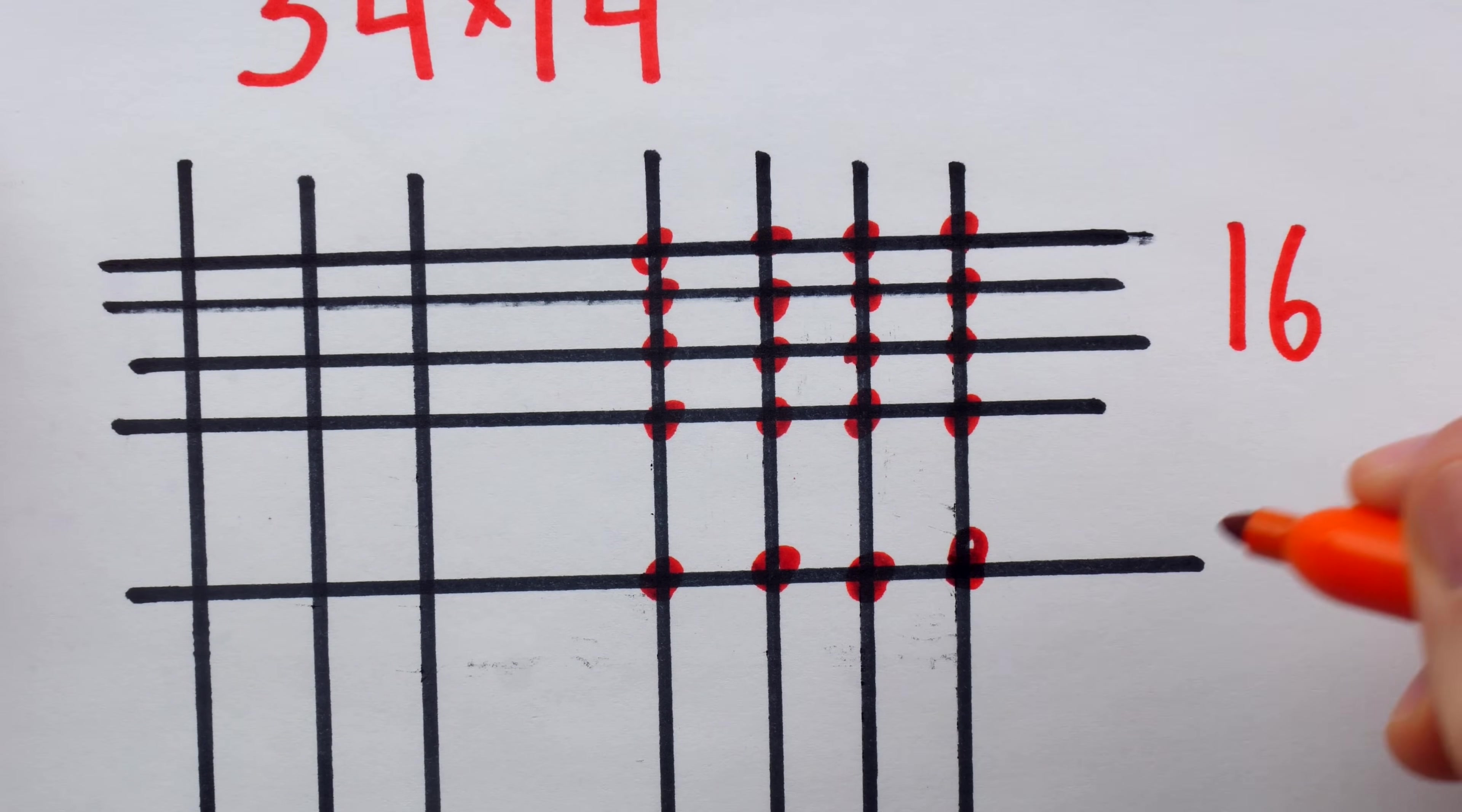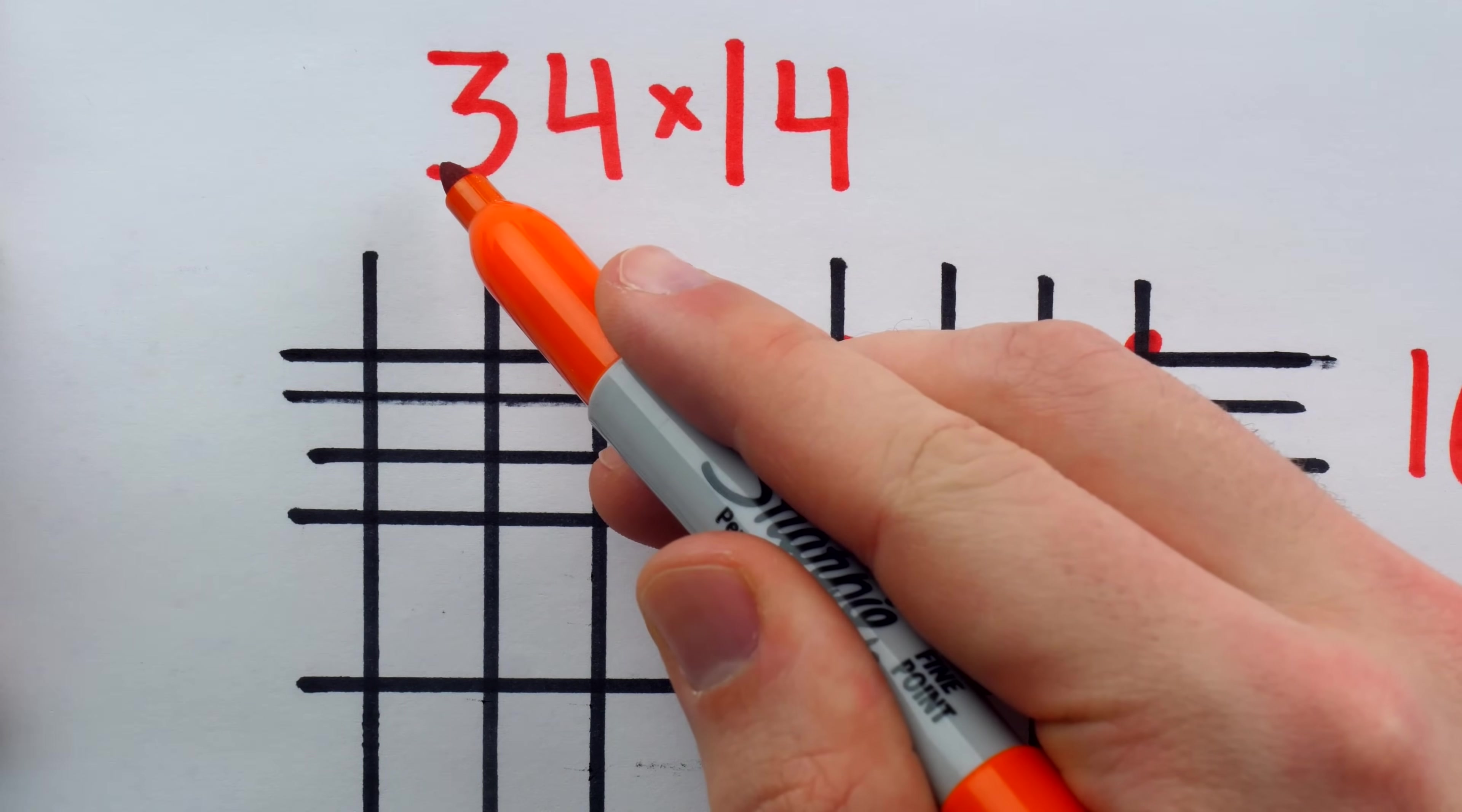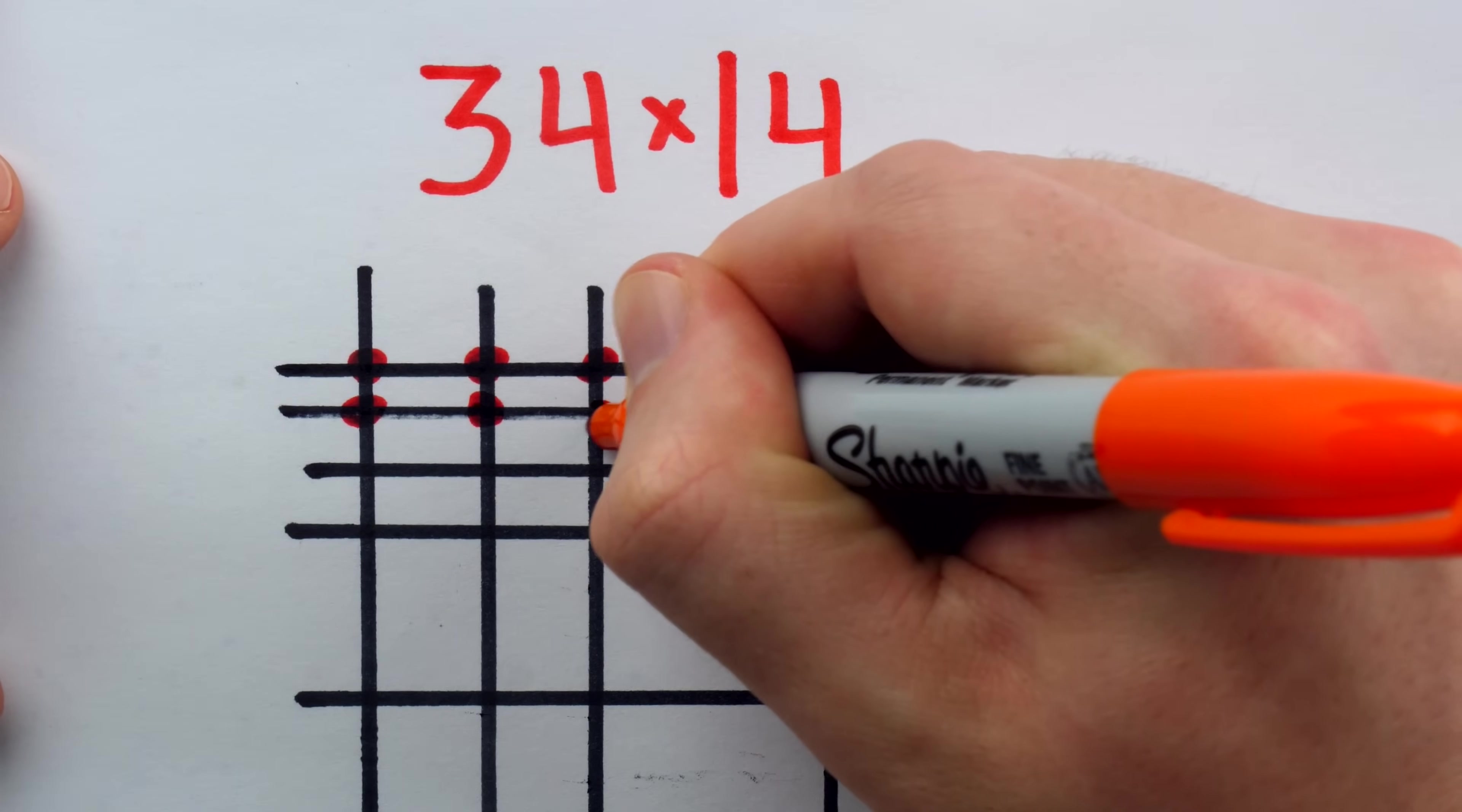Down here we have four intersections. This is ones place times tens place, so this four is actually representing 40. Over here is tens place times ones place, and we have a total of 12 intersections. So this is actually representing 120.